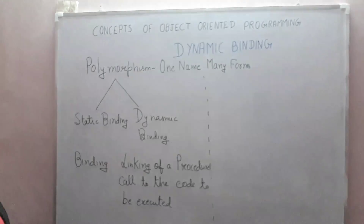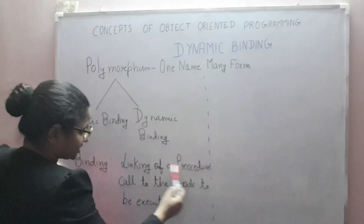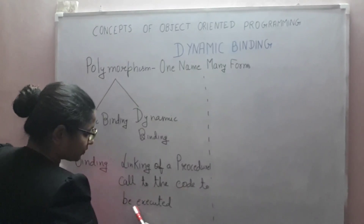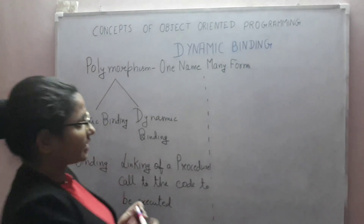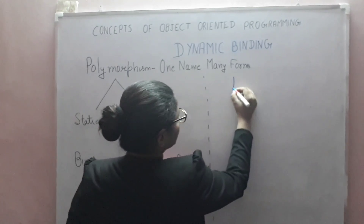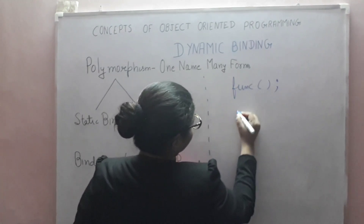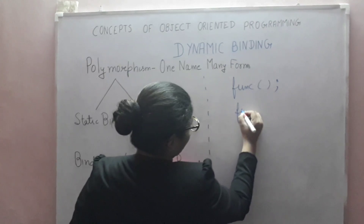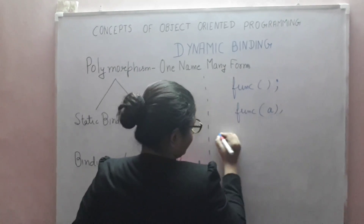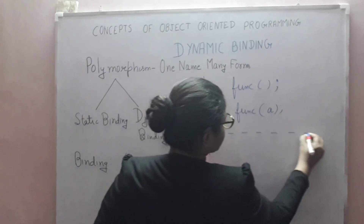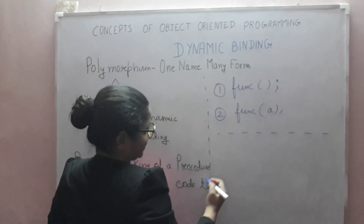But what is binding? Binding means linking of a procedure call to the code to be executed. What does it mean? It means you are having two function calls — function call first and function call second.